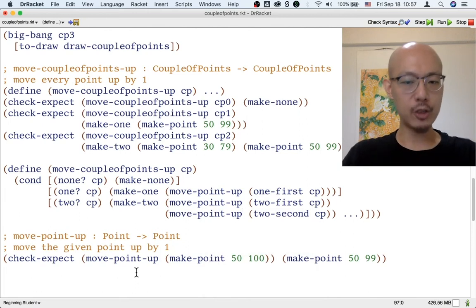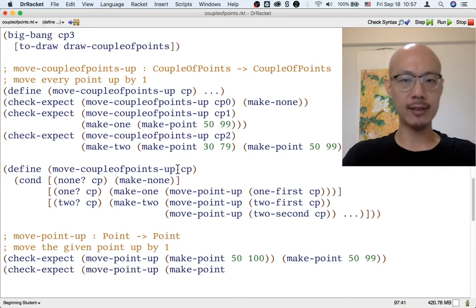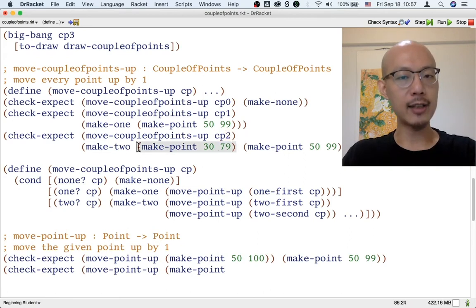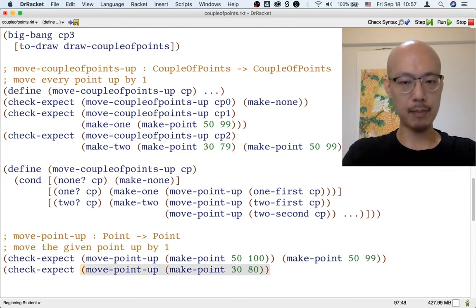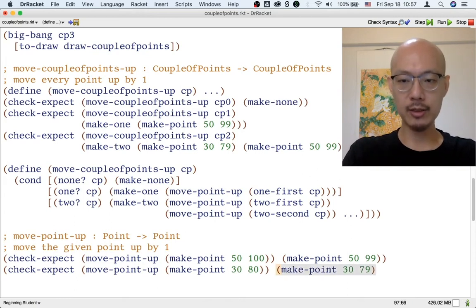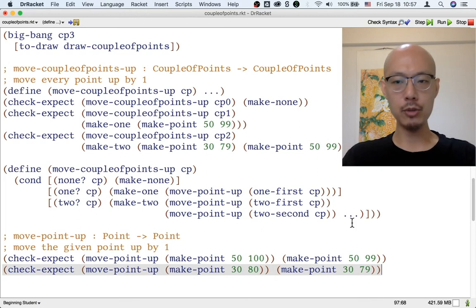But we have additional examples now for this move point up function. Because if you look at CP2, it doesn't just have 5100. It also has 3080. We also turn 3080 into 3079. So if we have 3080 passing it to this function move point up that we are in the middle of writing examples for, we should get 3079. And if we do, then we are done with moveCouplePoints.